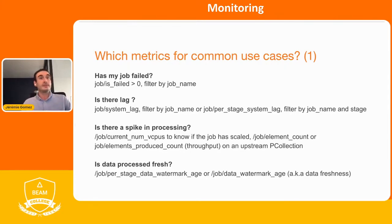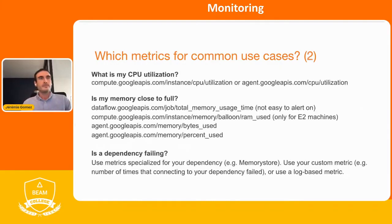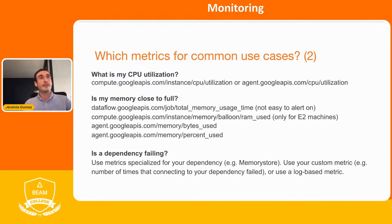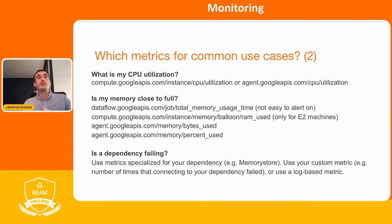Is data processed fresh or old? Use the data watermark age, or per-stage data watermark age — also known as data freshness. What is my CPU utilization? You could use the worker metric CPU utilization, or the agent metric if installed. Is my memory close to full? You have the native metric total memory usage time, but it's not easy to alert on since it increases with time. Instead, if you're using an E2 machine, use the worker RAM used metric, or use the agent metrics.